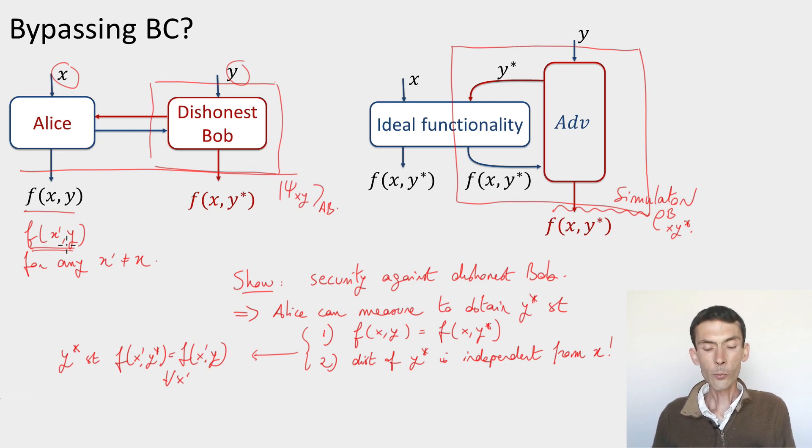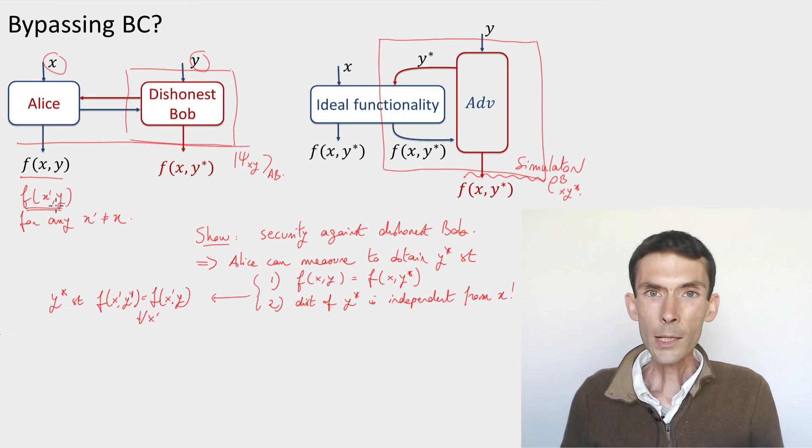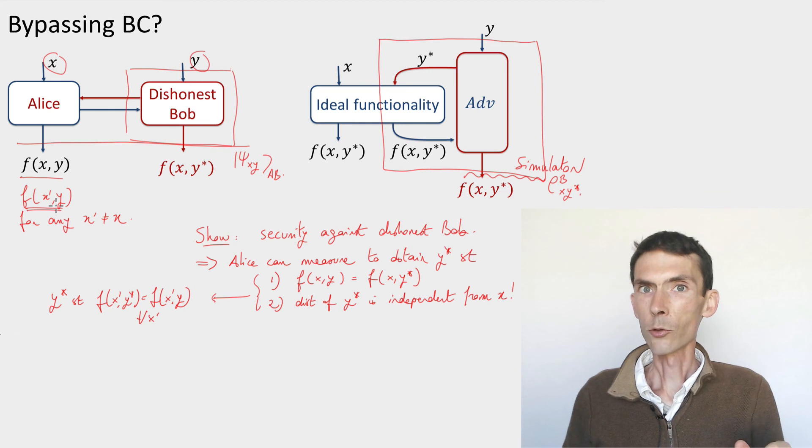So she can compute all these values f of x prime y and thus the protocol is broken. So I haven't shown you the details here they're a bit tricky to establish but it's really similar ideas to bit commitment. It's a very strong impossibility result for multi-party computation even in the case of quantum protocols. Now that impossibility result applies to protocols that have perfect security or near perfect security.